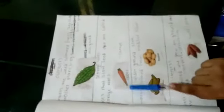Storage roots: Roots that store food, they are called storage roots. Example: carrot.